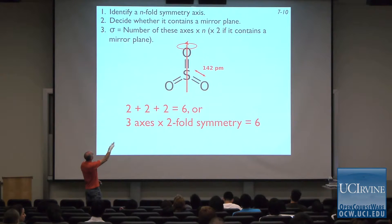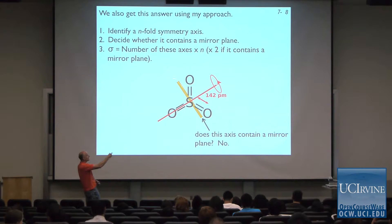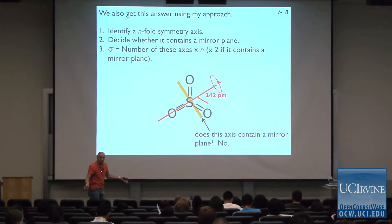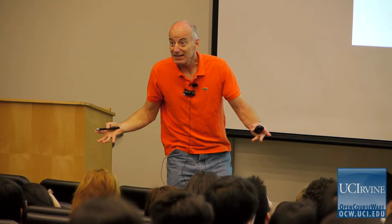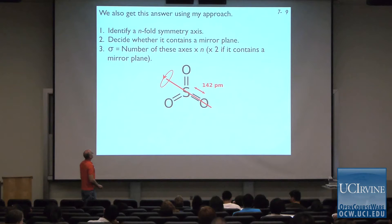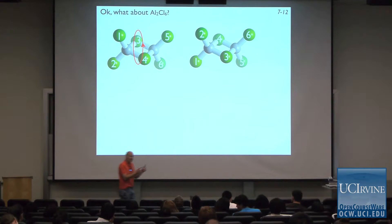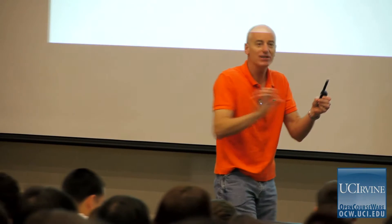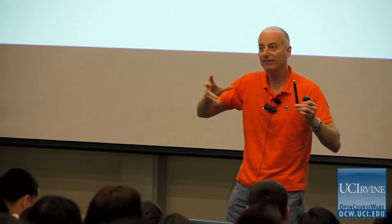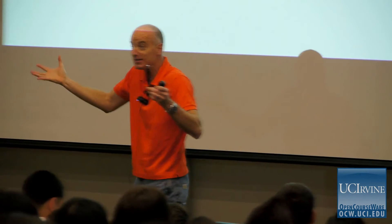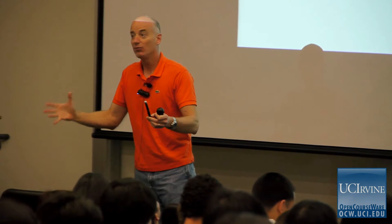Everyone see that? Three steps: identify a symmetry axis, decide whether it contains a mirror plane (in this case it doesn't — I can't put a mirror anywhere along this axis and get a mirror plane), and if I could, the symmetry number would be 12. Now let's do aluminum chloride. Again, because the molecule is small, I can put a label on every single atom, turn it around, and figure out how many indistinguishable orientations there are without any formulas.